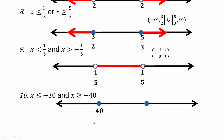For negative 40 less than or equal to x and x less than or equal to negative 30: x less than or equal to negative 30 goes left, x bigger than negative 40 goes right. Simultaneously, everything must be in between. Since both endpoints are included, use closed brackets. Remember: always go from smallest to largest — smallest number on the left, largest on the right, preserving how they sit on the number line in interval notation.